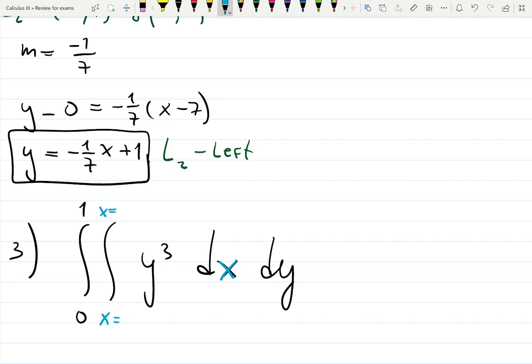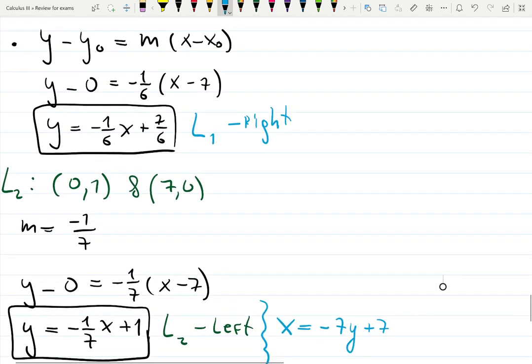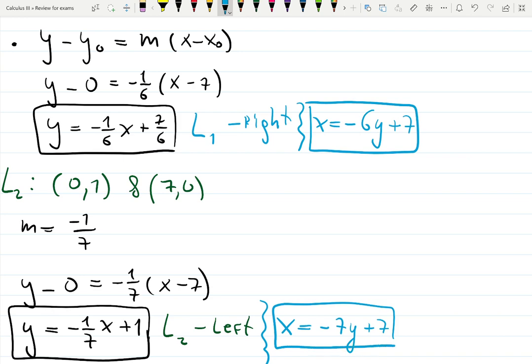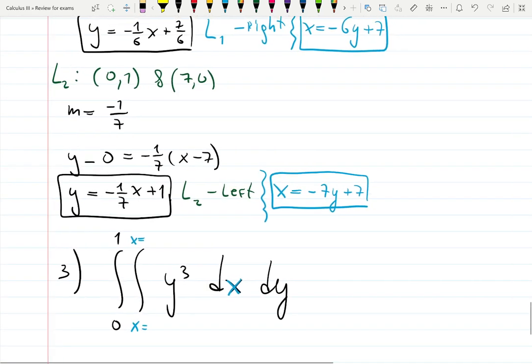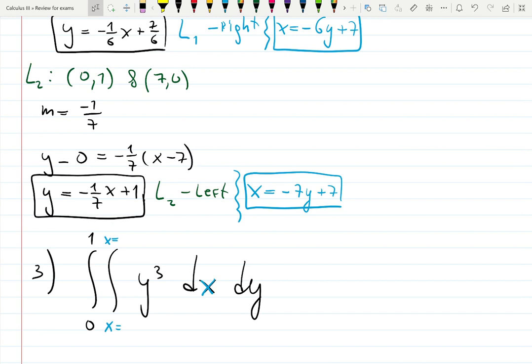But the thing is, the equation here should be x equals, and we don't have x equals. As you can see, for case two you need to do one more extra step to solve for x, and it's not very hard. Just move 1 and multiply by -7: it will be x equals -7y + 7 for the second line. And this one: x equals—move 7/6 and multiply by -6—will be x equals -6y + 7. These will be used for the limits of integration.